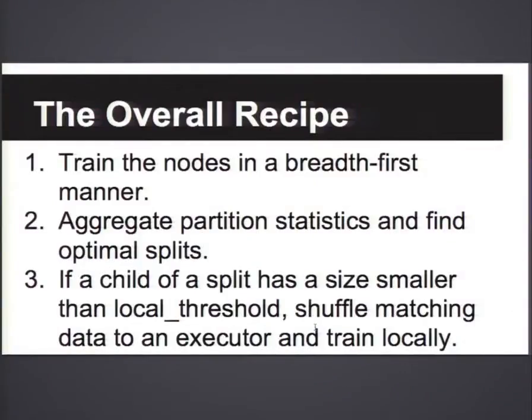For the first few levels, we train in a distributed fashion, but once we get to a point where we have small enough sample size for subtrees, we train each subtree in a single executor. The overall recipe is we do this in a breadth-first manner, depth by depth, so we can train multiple nodes at the same time. If you do it depth-first, you can only train one node at a time. First we do distributed node splitting, then local subtree training, and repeat this process for multiple trees simultaneously.